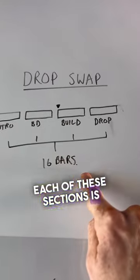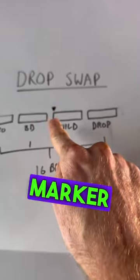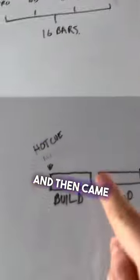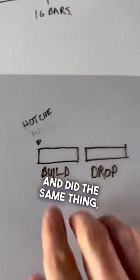Each of these sections is 16 bars long. So if we put a marker at the beginning of the build, which is 16 bars before the drop, and then came to our second song and did the same thing,